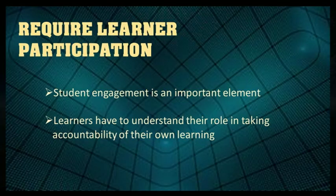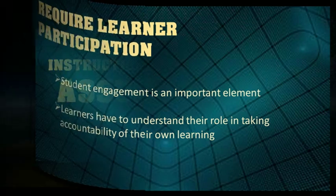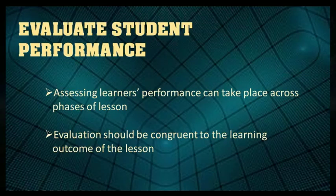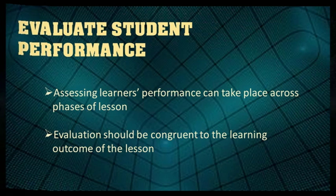The next step is R — Require Learner Participation. Here, student engagement is an important element. Learners have to understand their role in taking accountability for their own learning. And the last step is E — Evaluate Student Performance. Assessing learners' performance can take place across phases of the lesson. Evaluation should be congruent to the learning outcome of the lesson.